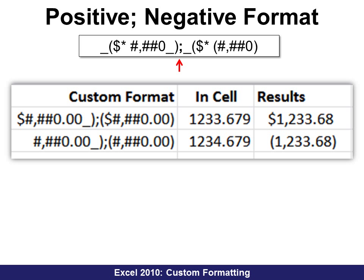If there is a semicolon separator between two sets, the one on the left is for positive numbers and the one on the right is for negative numbers. So the semicolon means there are two options. If there's only one option, it will show the same for both positive and negative. But in this case, I have one format for positive and one for negative.